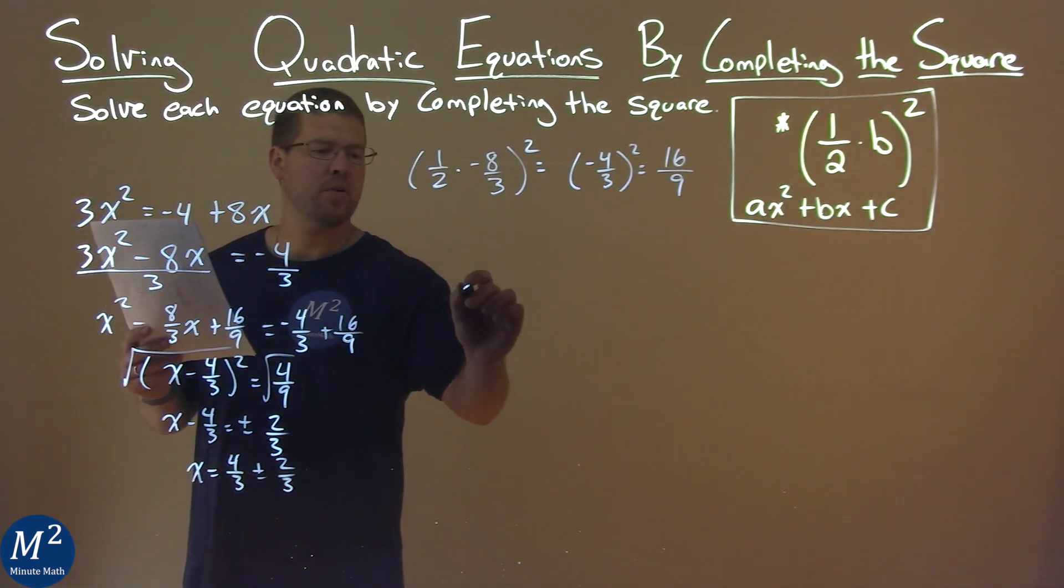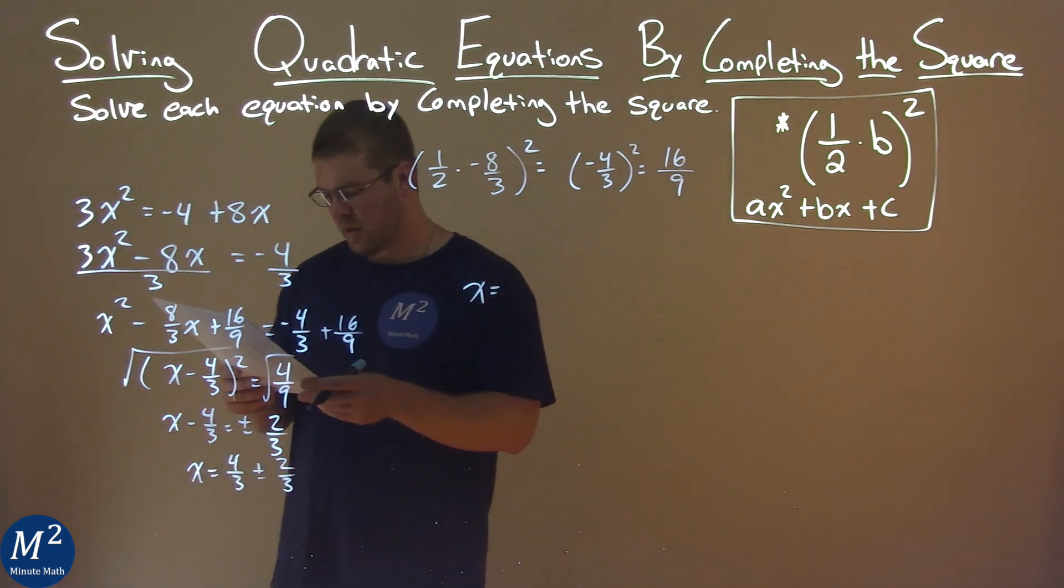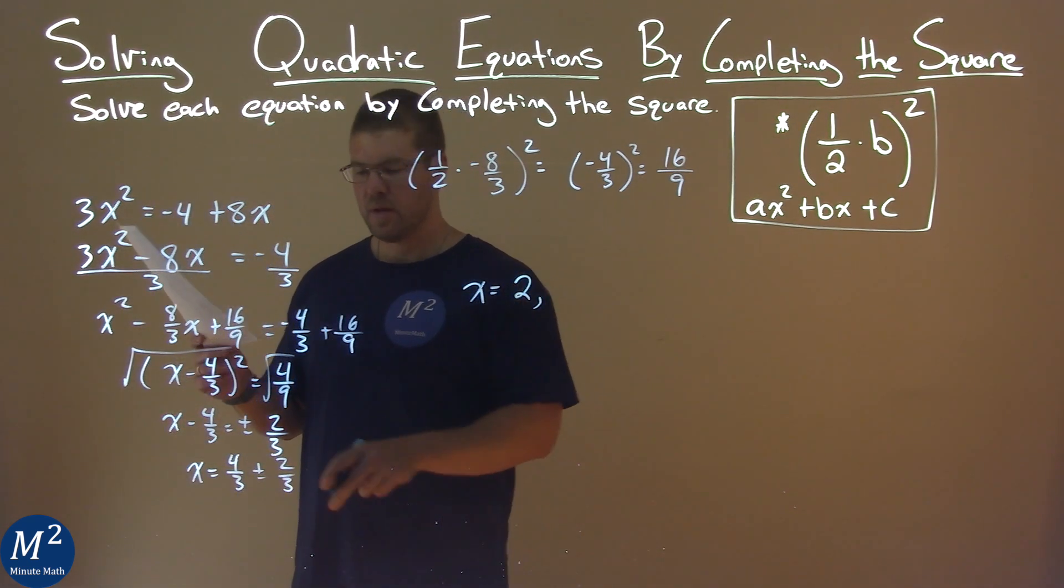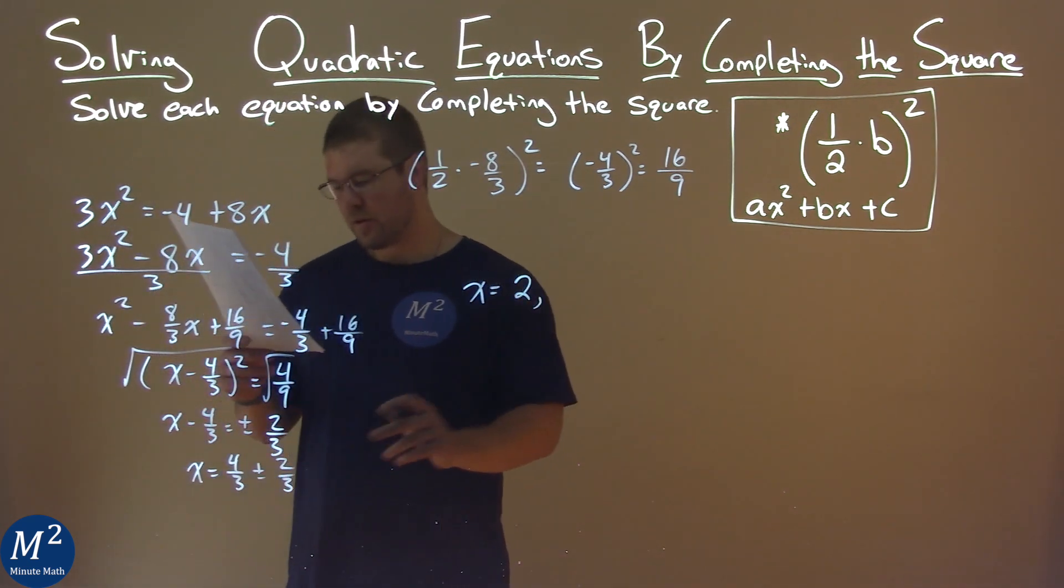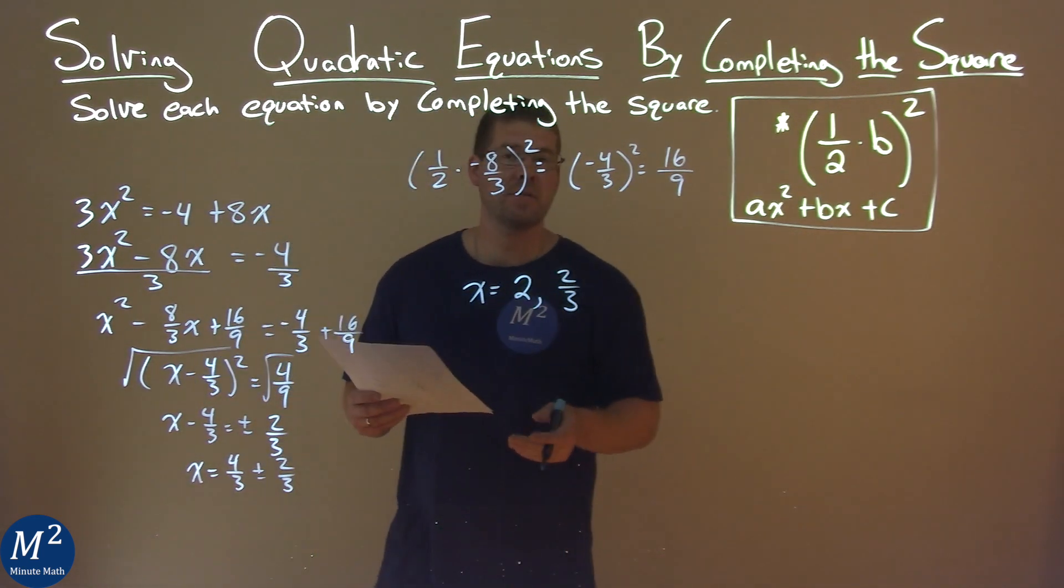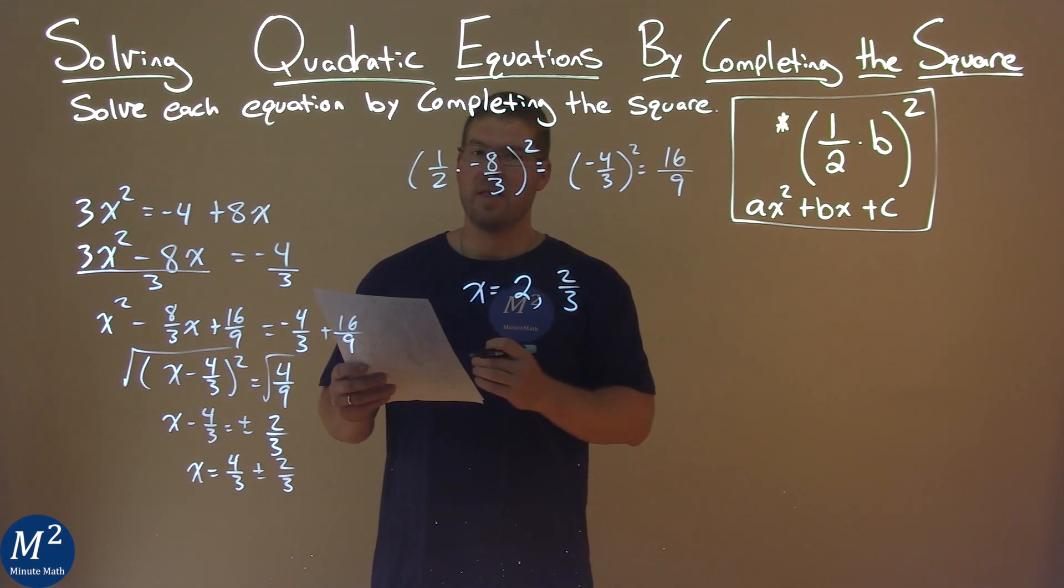And now we can write them by solving each, the addition and then the subtraction. So 4/3 plus 2/3 comes out to be positive 2, while 4/3 minus 2/3 comes out to be 2/3. And so my final answer is x = 2 and x = 2/3.